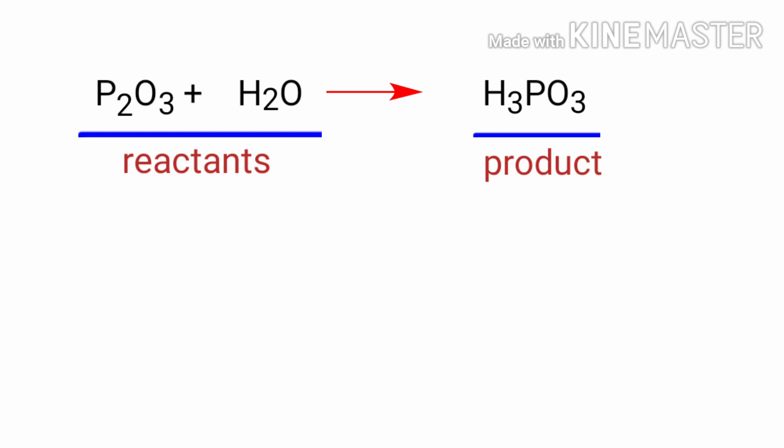In this equation, the reactants are diphosphorus trioxide and water, and the product is phosphorus acid. If you look at this equation, the equation is not balanced.